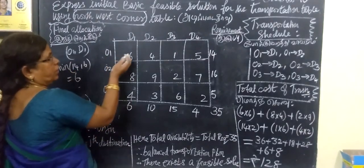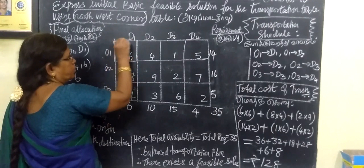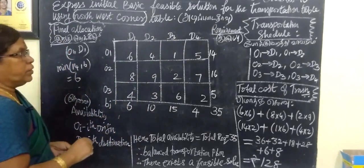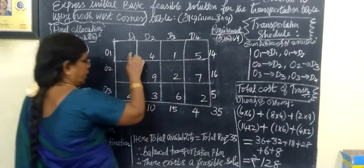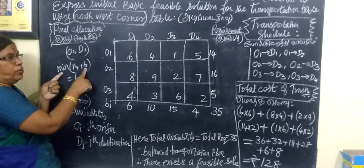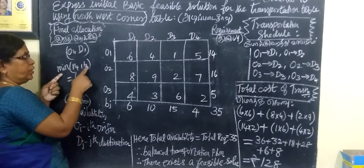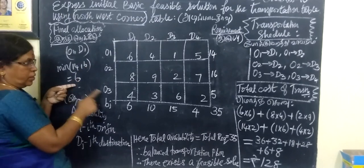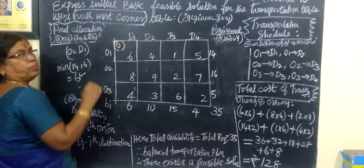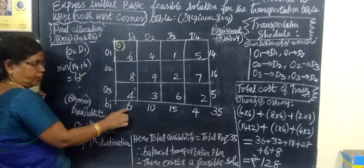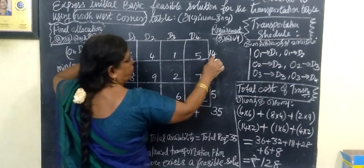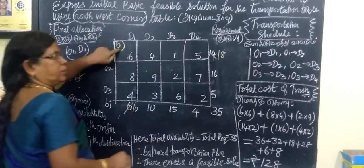First, for the Northwest Corner method, you select the first cell — this is the Northwest corner. The cell is O1D1. You consider the corresponding row value and column value. You take the minimum of the row and column value. The minimum of 14 and 6 is 6. So immediately you write the minimum value 6 at the top corner.